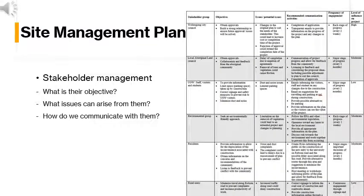The Stakeholder Management Plan has an in-depth analysis of the key stakeholders such as the local councils, residents, environmental groups and university members. The report shows how their issues can be managed, their level of influence on the project, and our objectives with each stakeholder. This is showcased in the accompanying table.